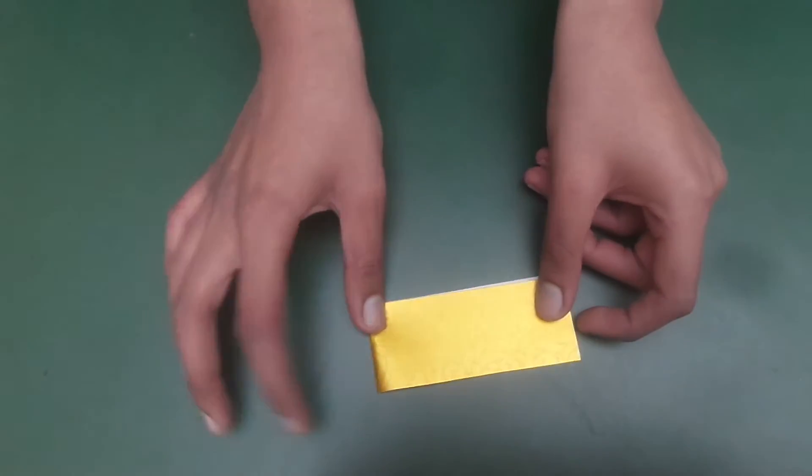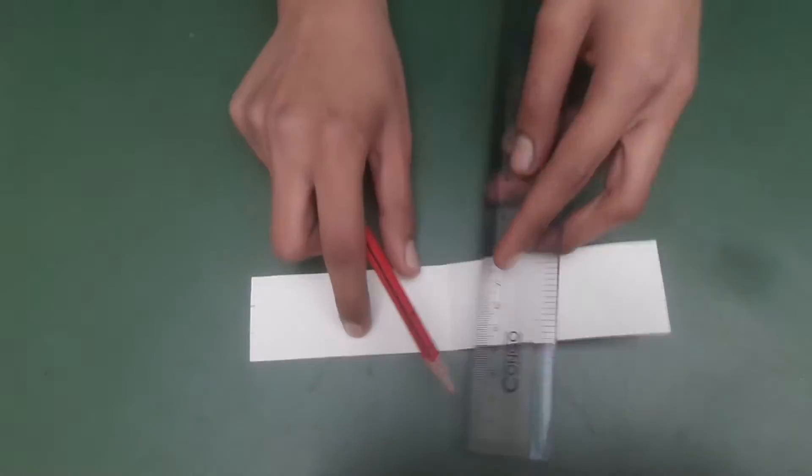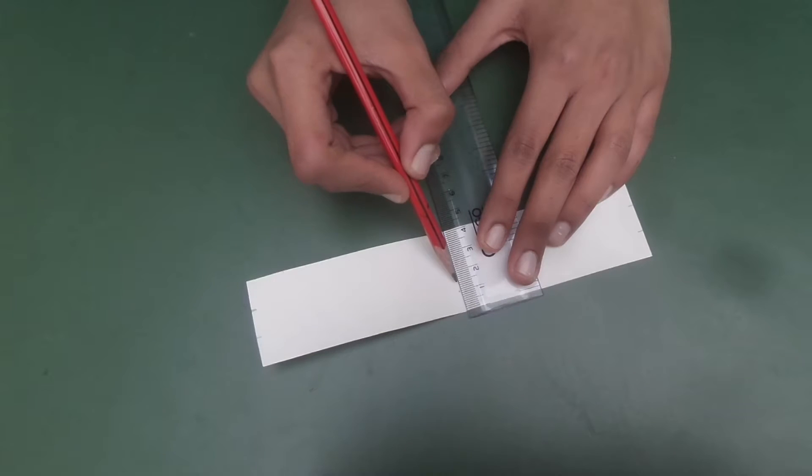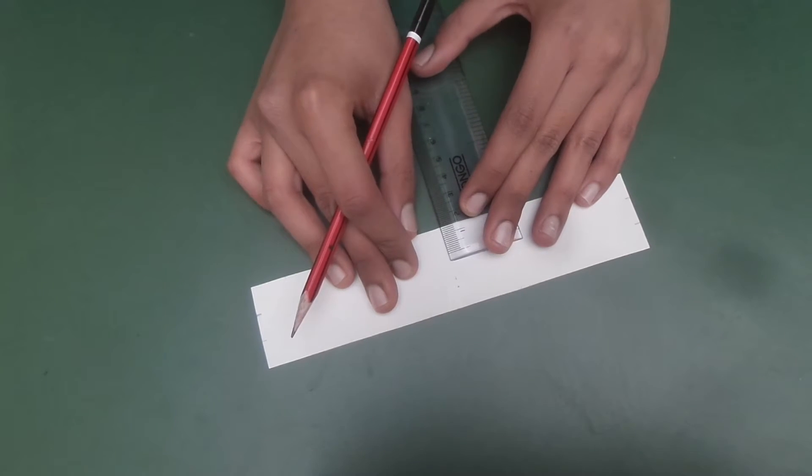Now I'm folding the strip so that I get a midpoint and just crease it well. This is going to be very helpful to us. Again, I'm marking 1.4, 1.2, and 1.4.